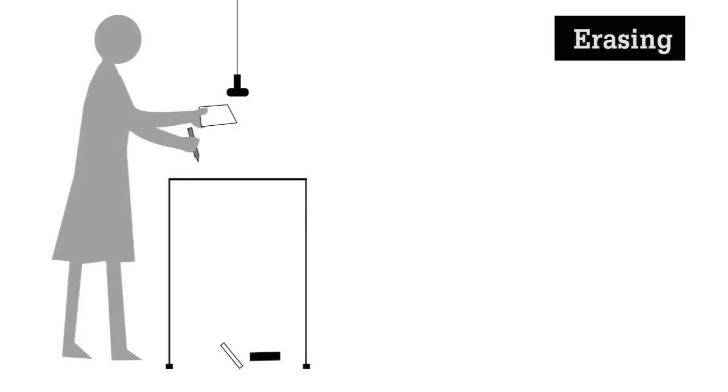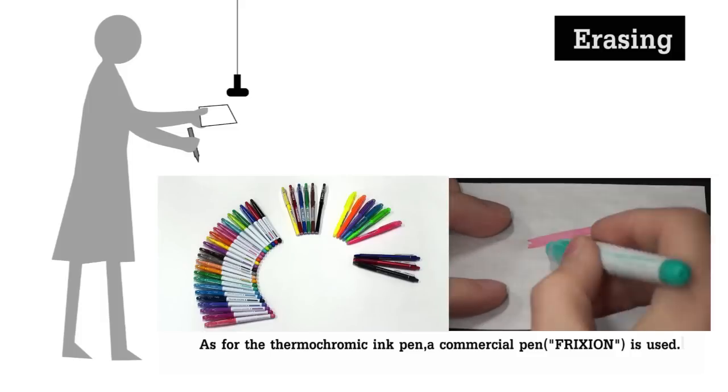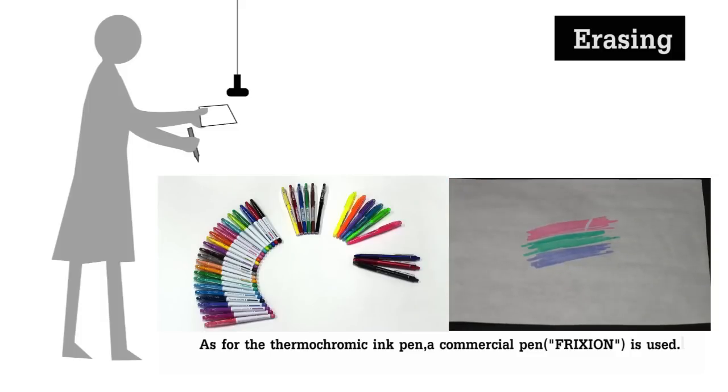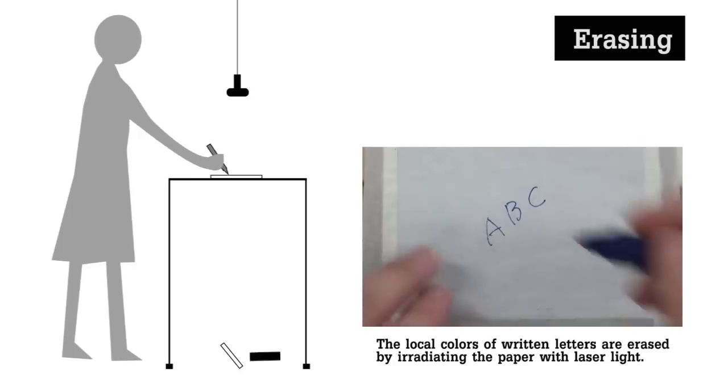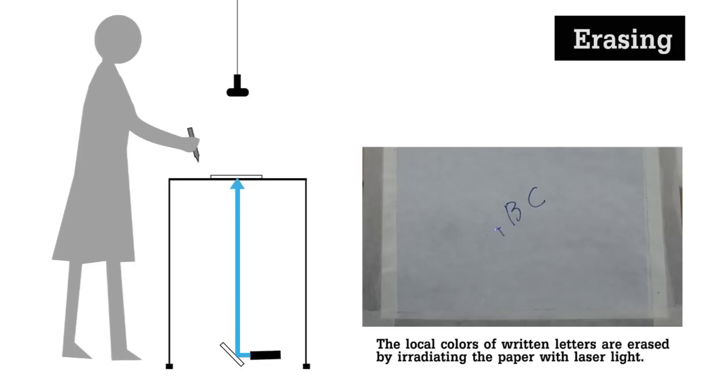The erasing part is composed of thermochromic ink pen, paper, a laser, and a camera. As for the thermochromic ink pen, a commercial pen of 24 colors is used. The local colors of written letters are erased by irradiating the paper with laser light from a galvanometer scanner controlled by a captured image.